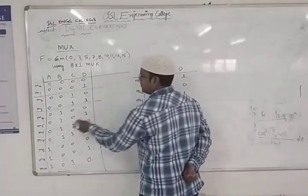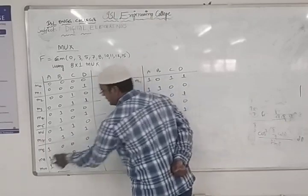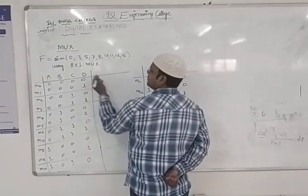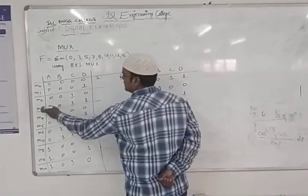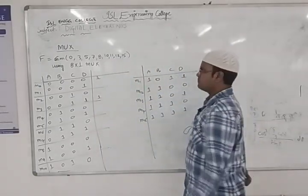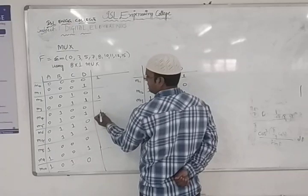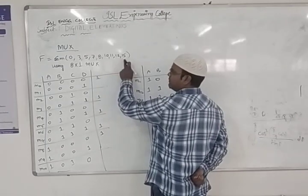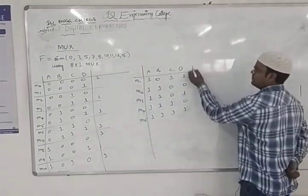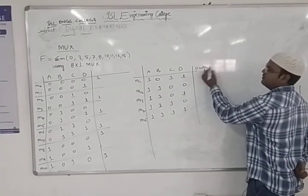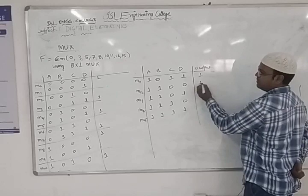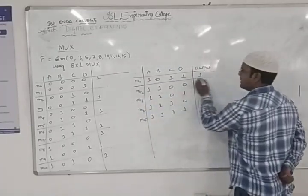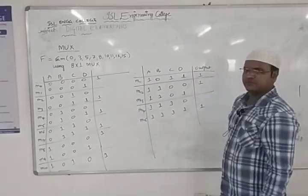Next, I segregate the output into two parts. For the given minterms — 0, 3, 5, 7, 8, 10, 11, 12, 15 — the output is high (1). For the remaining values, the output is zero. So I mark 1s at those minterm positions and 0s at all others.